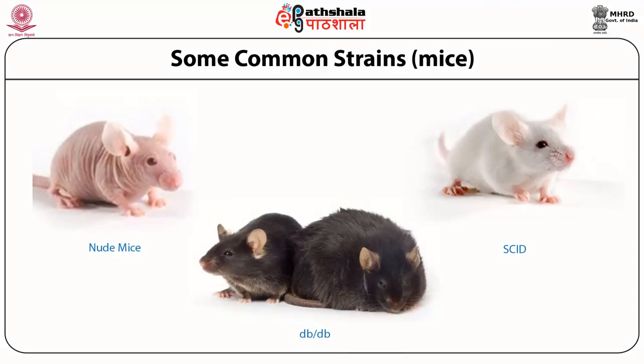Some immunocompromised and mutated mouse models: the nude mouse, where T-cells are completely depleted. The SCID mouse — severe combined immunodeficient — lacks both T and B cells. These two models have wide application in cancer research, gene therapy, and stem cell therapy. The DBDB mouse is a mutated model where the leptin gene is mutated, making the mouse obese and diabetic, useful for diabetic research.